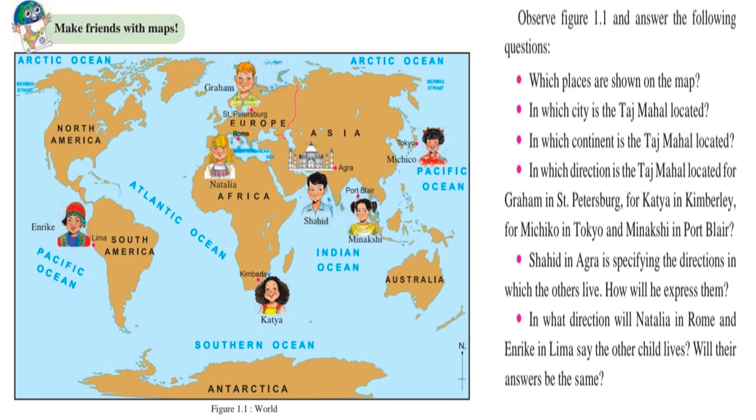So, the location of Taj Mahal for Graham who lives in St. Petersburg, the position of Taj Mahal is Southeast. For Cartier in Kimberley, South Africa, the direction is pointing towards Northeast. For Michiko in Tokyo, Japan, Taj Mahal is due to its West. And for Meenakshi who lives in Port Blair, the direction is Northwest.